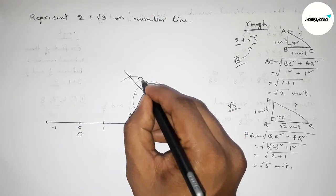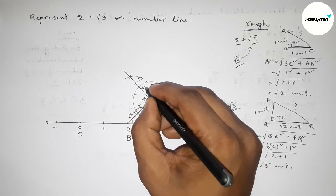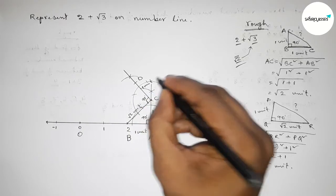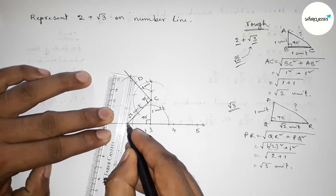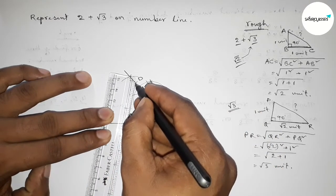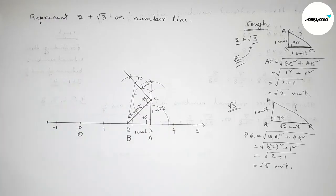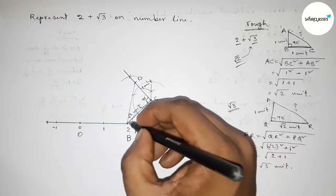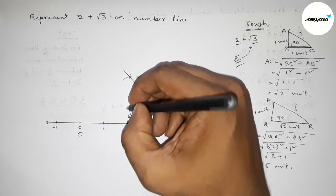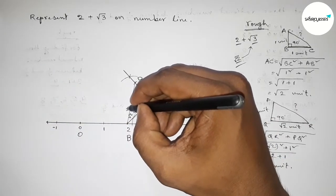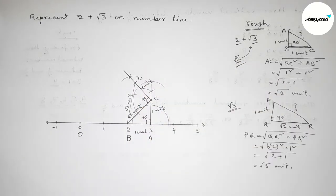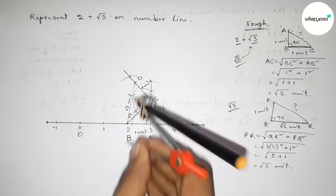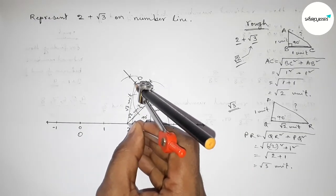Putting the compass on point C and cutting to mark point D. This CD is 1 unit length. Now joining B and D. From this we can say that BD is root 3 units in length. Taking BD equal to root 3 units using the compass.